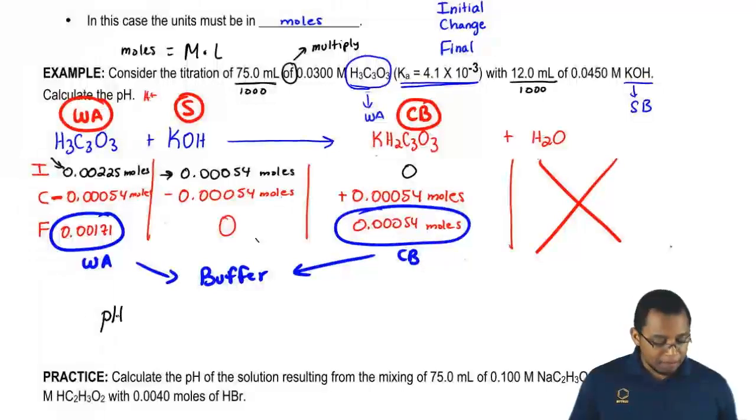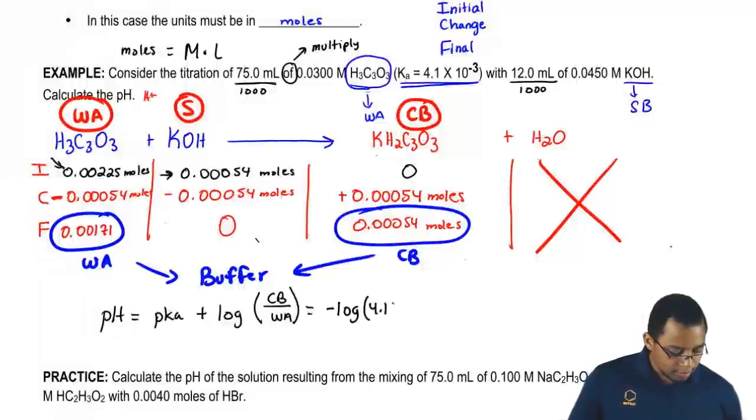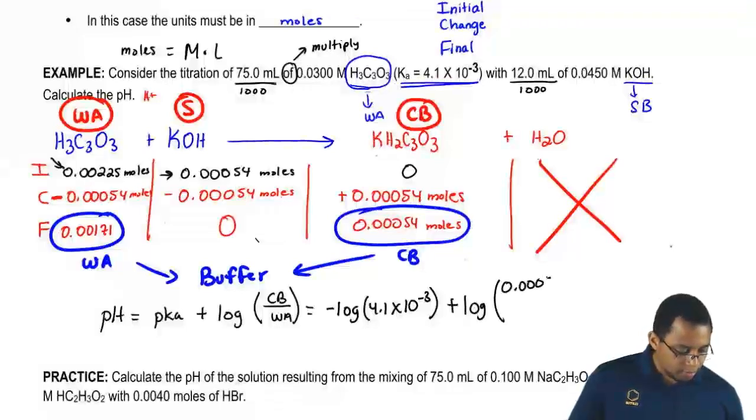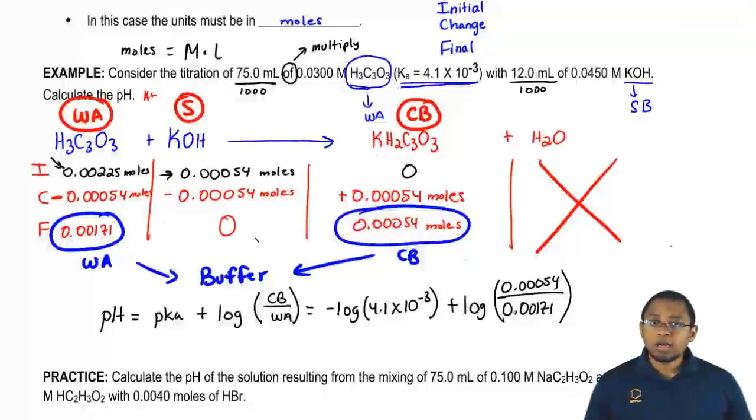For Henderson-Hasselbalch, pH equals pKa plus log of conjugate base over weak acid. Negative log of Ka plus log of the conjugate base over the weak acid. Punch that all into your calculator and you should get back 1.89 for your pH.